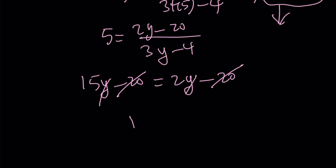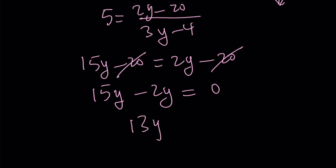What's the reason for that? The reason is if you do that, that means you're basically dividing both sides by y, but y is equal to 0. So bring the 2y over, you get the following: 15y minus 2y equals 0. And this just means that 13y equals 0, which means y is equal to 0.